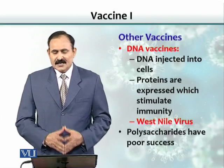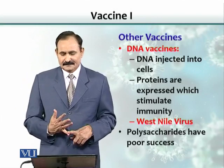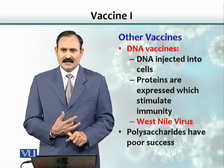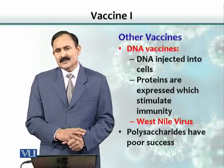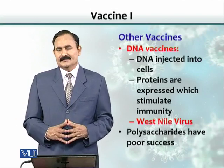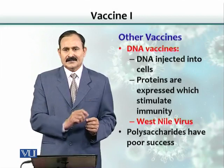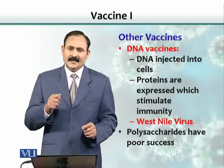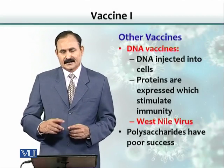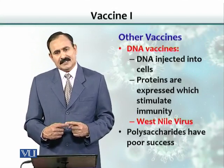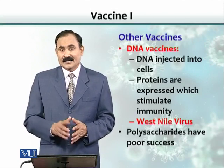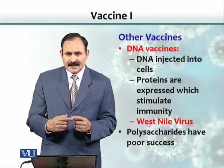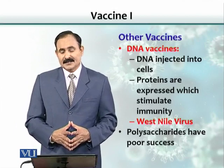DNA vaccines involve injecting DNA that codes for a protein of the microbe against which we want to make antibodies. Using recombinant technology, we can isolate that gene, put it into a vector, make copies of the DNA, and inject it into cells. The DNA is then transcribed into messenger RNA and protein is formed. These proteins are foreign to the body, and this behaves as if the organism is replicating inside the cells — a modern trend called DNA vaccines.